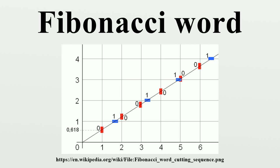A similar infinite word, sometimes called the rabbit sequence, is generated by a similar infinite process with a different replacement rule. Whenever the cursor is pointing to a 0, append 1; and whenever the cursor is pointing to a 1, append 0. The resulting sequence begins 0, 1, 0, 1, 1, 0, 1, 0, 1, 0, 1, 1, 0, 1, 1, 0, 1, 1, 0, 1, 1, 0, 1, 1, 0, 1, 0, 1, 1, 0. However, this sequence differs from the Fibonacci word only trivially, by swapping 0s for 1s and shifting the positions by 1. A closed form expression for the rabbit sequence gives the nth digit in terms of the golden ratio and the floor function.